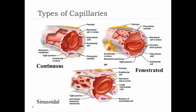Fenestrated capillaries have larger intercellular clefts and pores called fenestrations, covered with a thin delicate membrane. This gives them greater permeability to fluids and small solutes. We find these in the small intestine, endocrine organs, and kidneys — places where you need a bit more absorption or filtration of substances in and out of the blood.